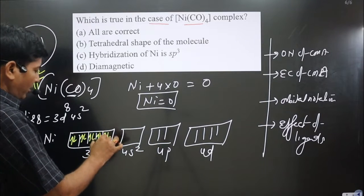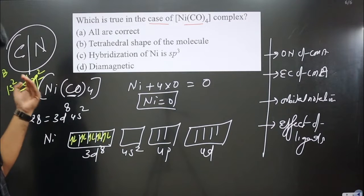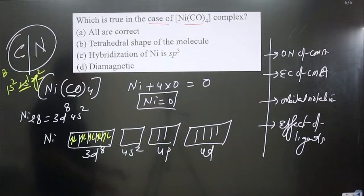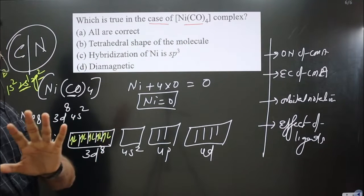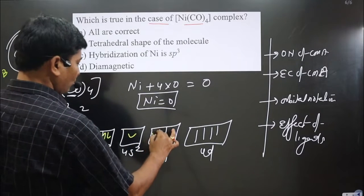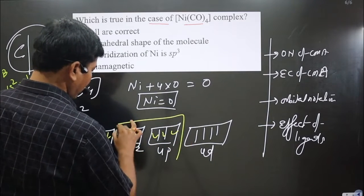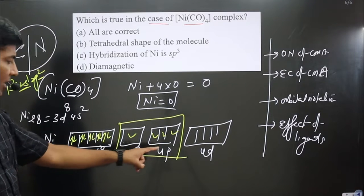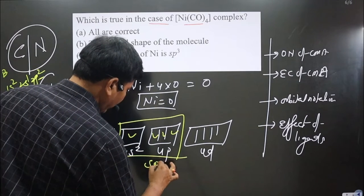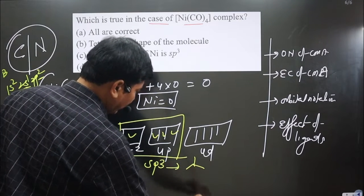Now we can find out the hybridization. There are four ligands, so we need four vacant orbitals: one, two, three, four. These are the orbitals available from the central metal atom to the incoming ligands. We have sp³ hybridization, which forms tetrahedral geometry.